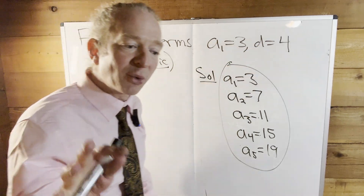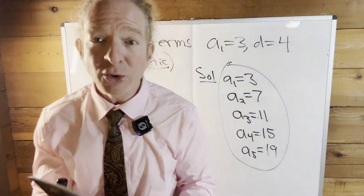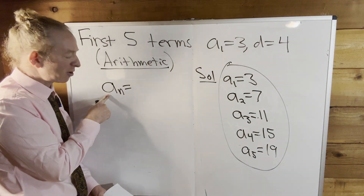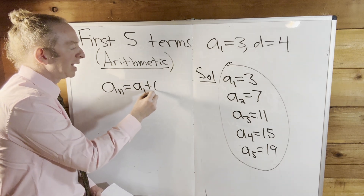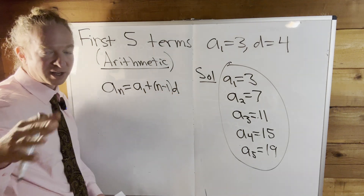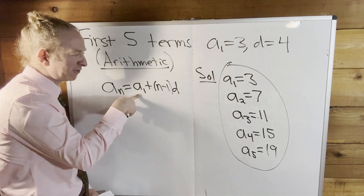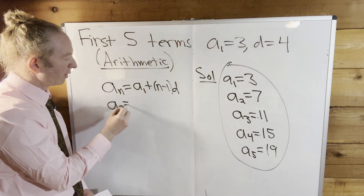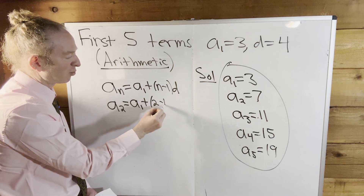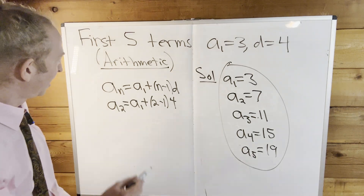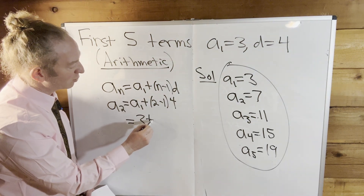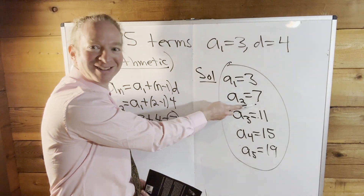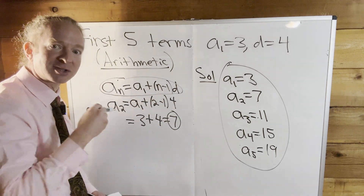The other way to do it — the way I do it in my book — is to use the formula. The formula tells you that the nth term of an arithmetic sequence is the first term plus n minus one common differences. To find the nth term, you take the first term and add n minus one common differences. In this example, a sub two would be a sub one plus (two minus one) times four. That's three plus one times four, which is three plus four, which is seven. Or we can just use some intuition and add four. Powerful formula though — you can use it for other applications.